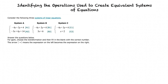Answer the questions below. For each, choose the transformation and then fill in the blank with the correct number. The arrow means the expression on the left becomes the expression on the right.